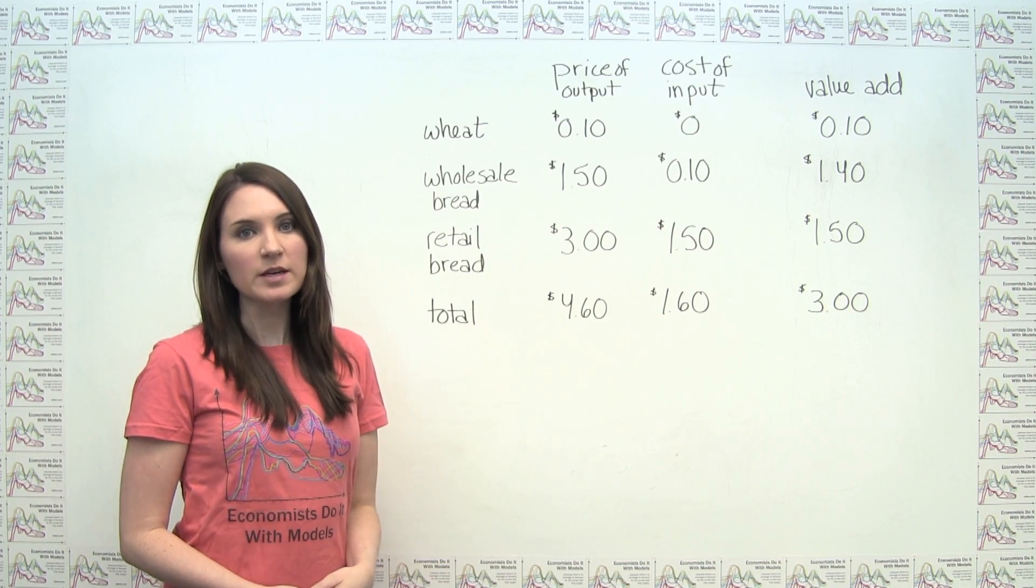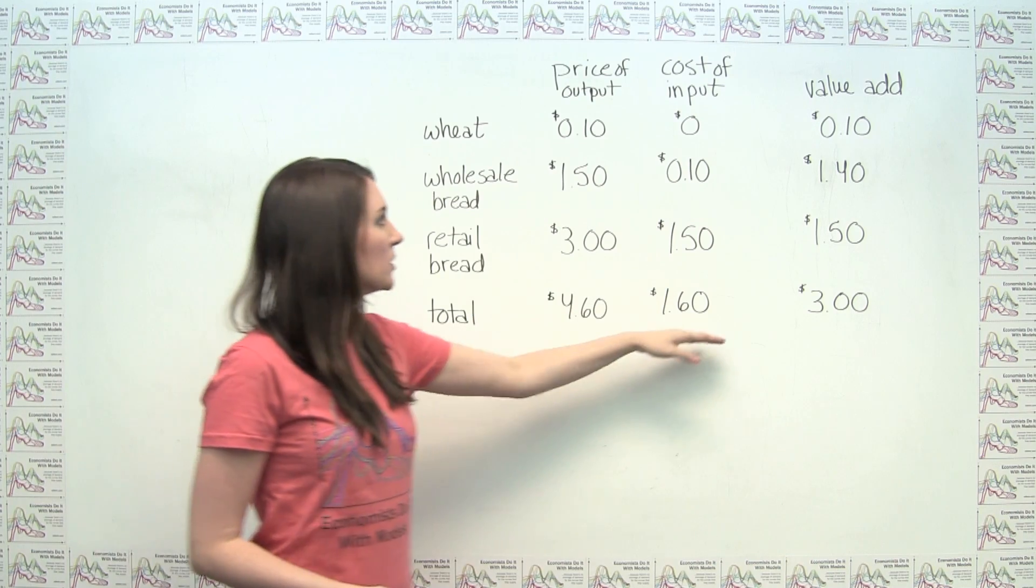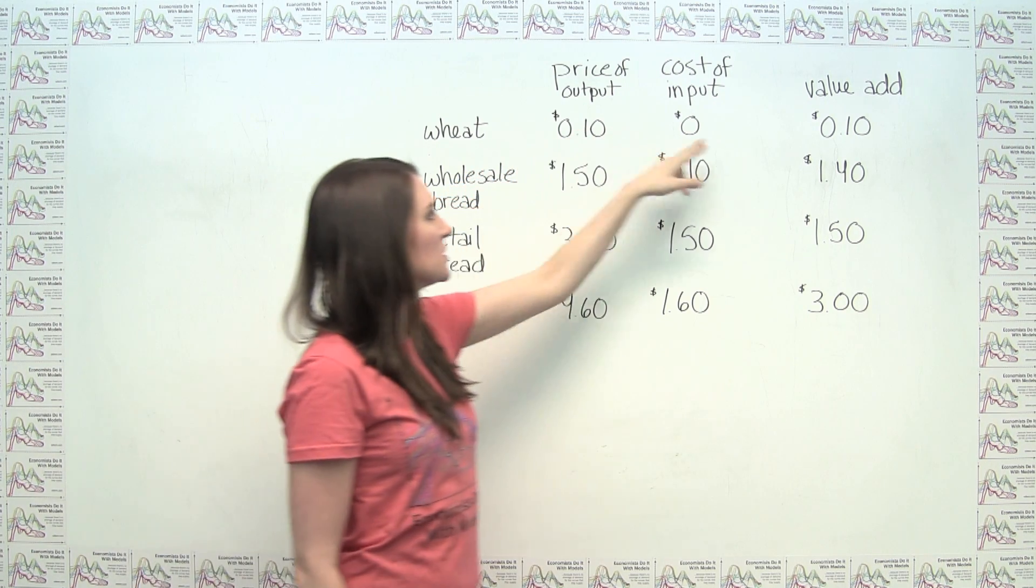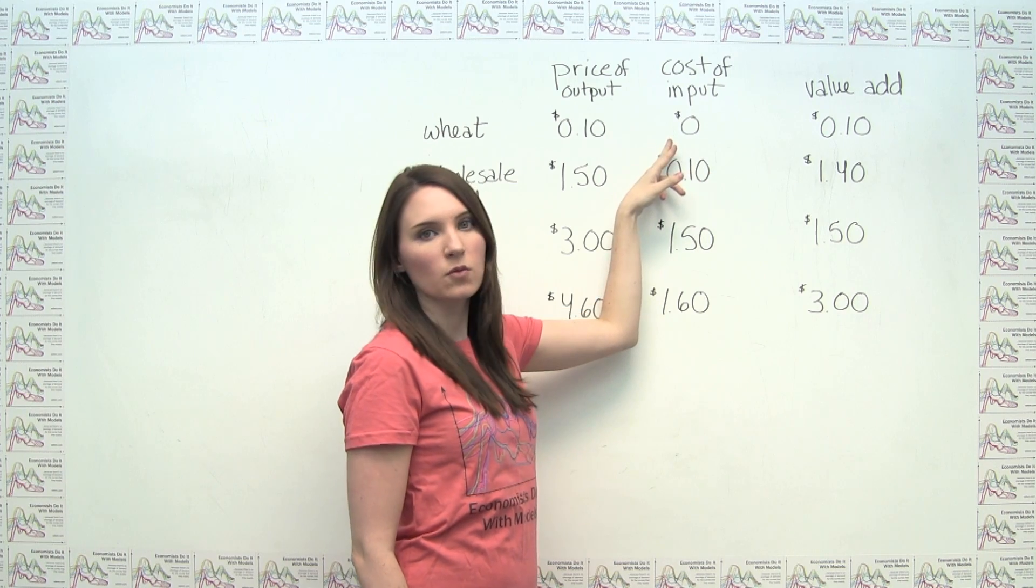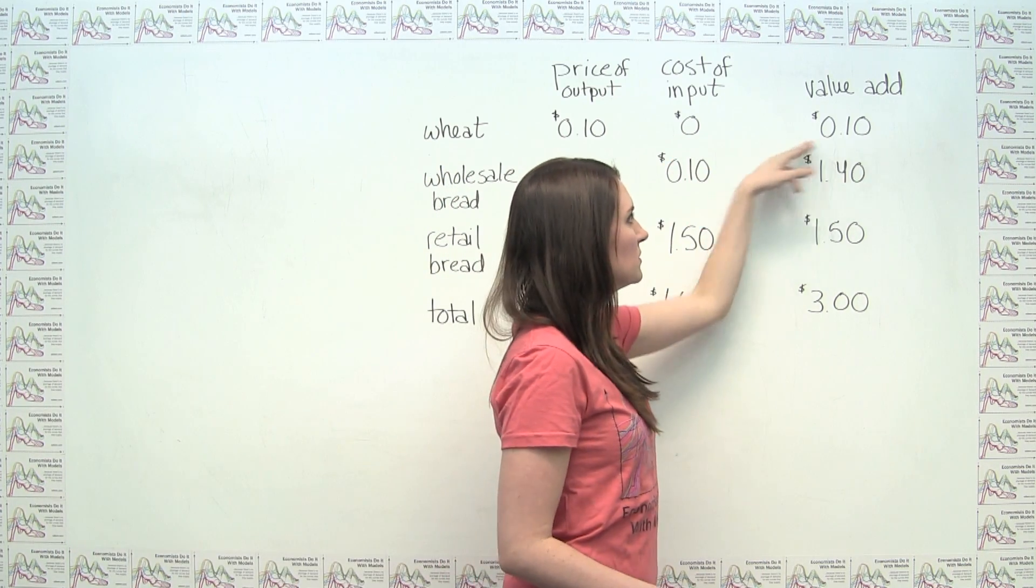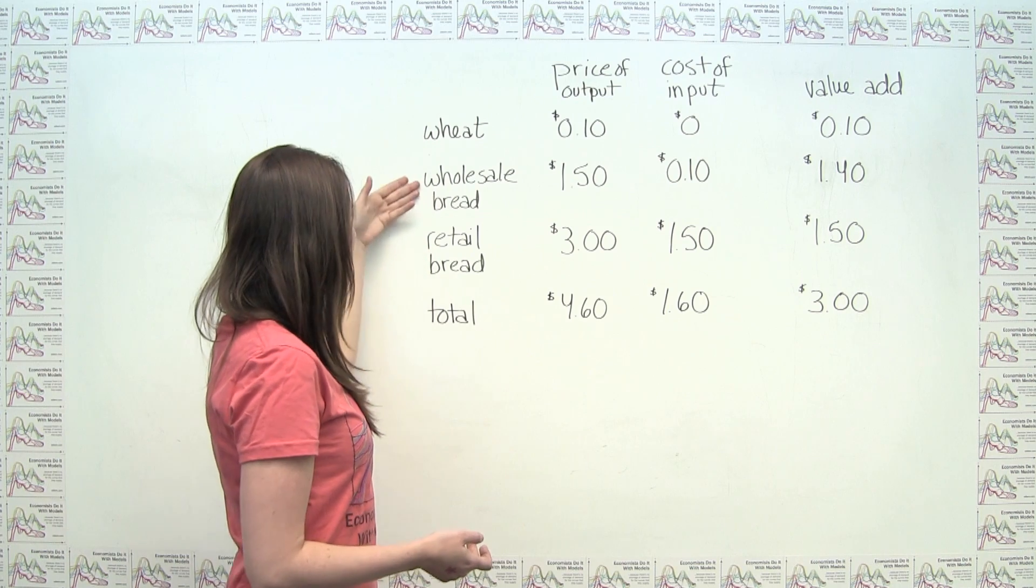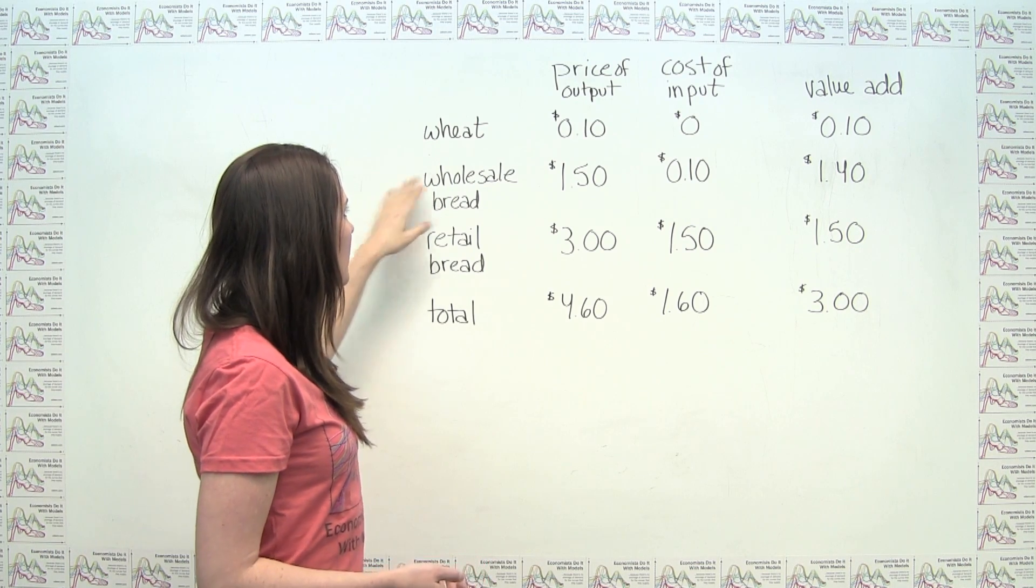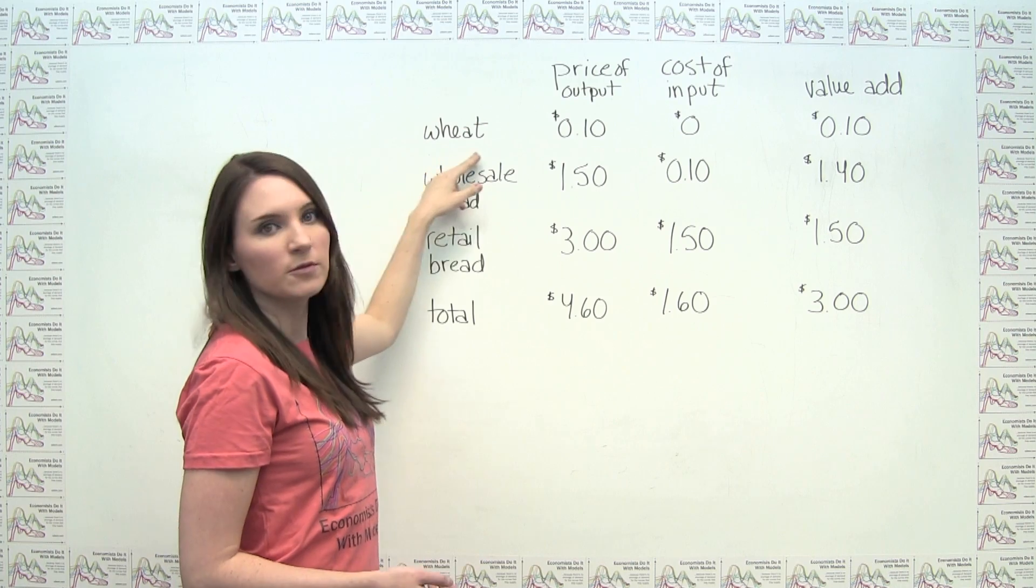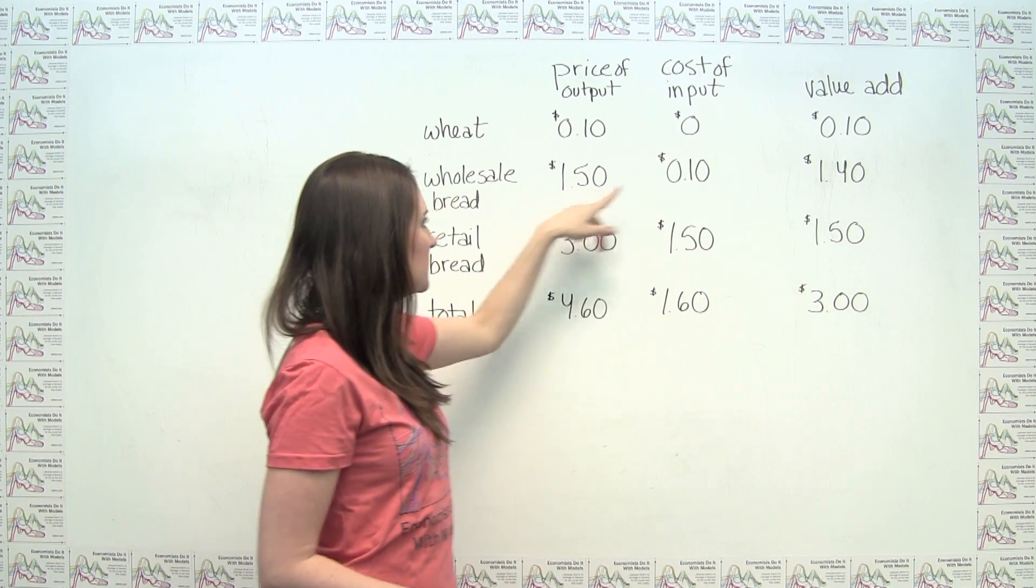An alternate method of calculating GDP is to add up the value added at each stage of the production process. In a very simplified bread example here, you'll notice that we said that the price of the output of the wheat used to make the bread was 10 cents, and let's just assume for simplicity that the cost of the wheat input was zero. In that case, the value added for the wheat grower would just be 10 cents minus zero, or 10 cents. Let's now assume that the wheat is the only input into the production process for the baker who's selling his bread wholesale. In that case, let's say he sells his output for $1.50, and then his cost of input was just the price of the output of the wheat grower, in which case his value add is $1.40, which is just $1.50 minus 10 cents.